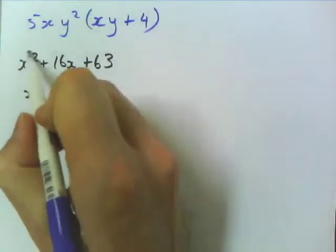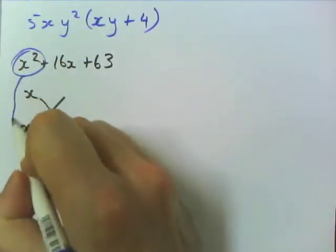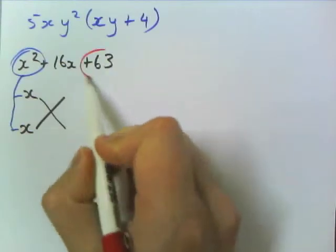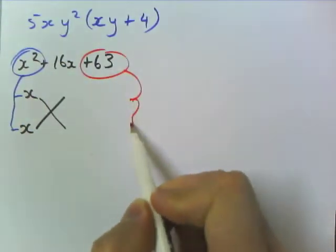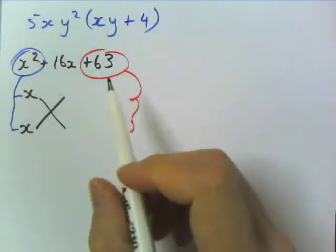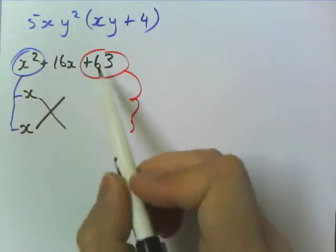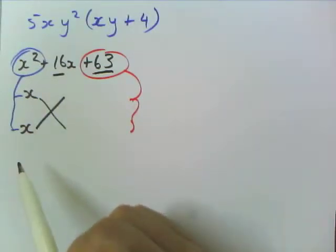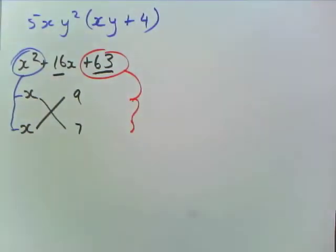So the factors of this first one here go down this side here. The factors of x squared go down here, and then the factors of 63 are going to go down this side here. So I'm going to write down. I know what the answer is because I know the factors of 63 have to add to 16. So I know it's 9 and 7.